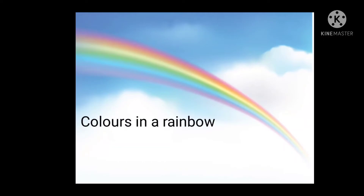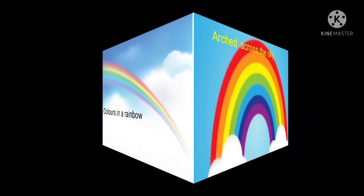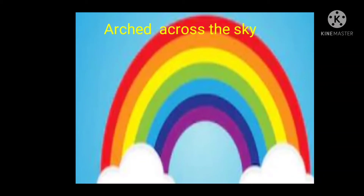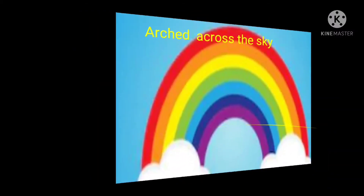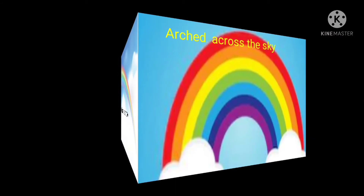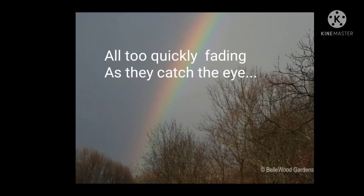Colors in a rainbow, arched across the sky. A light and raindrops work together to create a rainbow. When we see a rainbow arched across the sky, they will attract us — the orange rays, the sunshine. The stars rush up higher, all too quickly fading as they catch the eye. When we see the rainbow in the sky, they will attract us, but the colours will fade quickly.